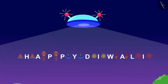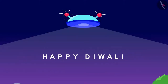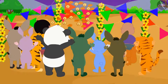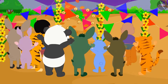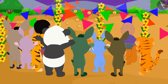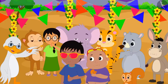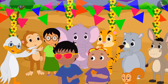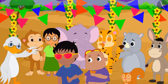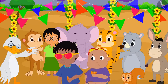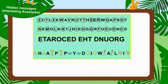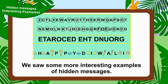As soon as Chanda solved that message, a lot of delicious sweets started raining from the sky. All the villagers ate the sweets with great pleasure. Children, in this video we saw some more interesting examples of hidden messages.